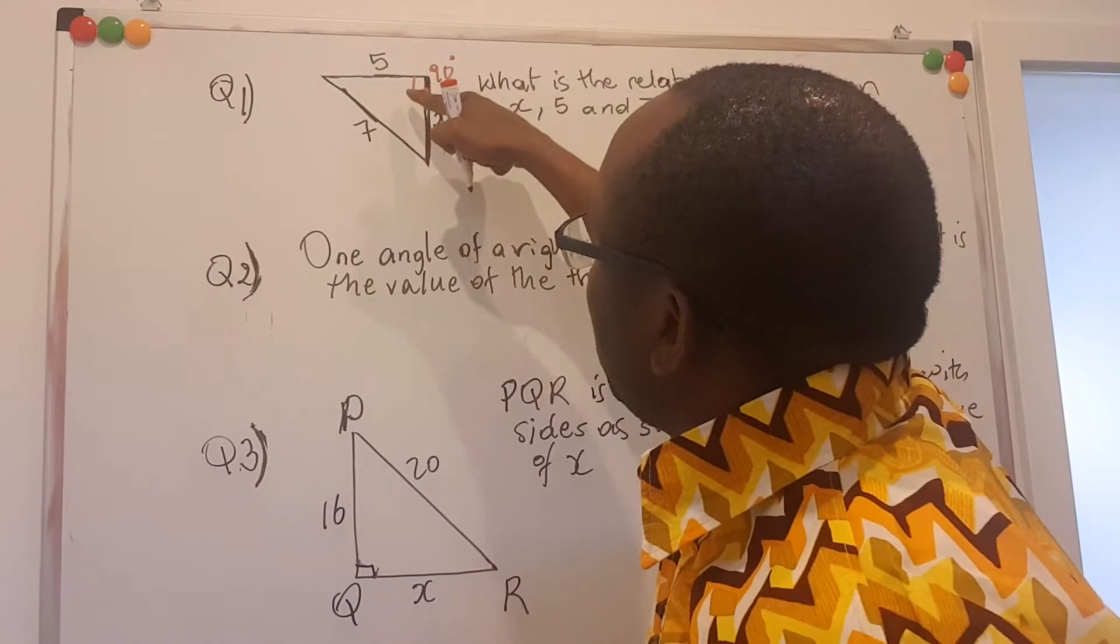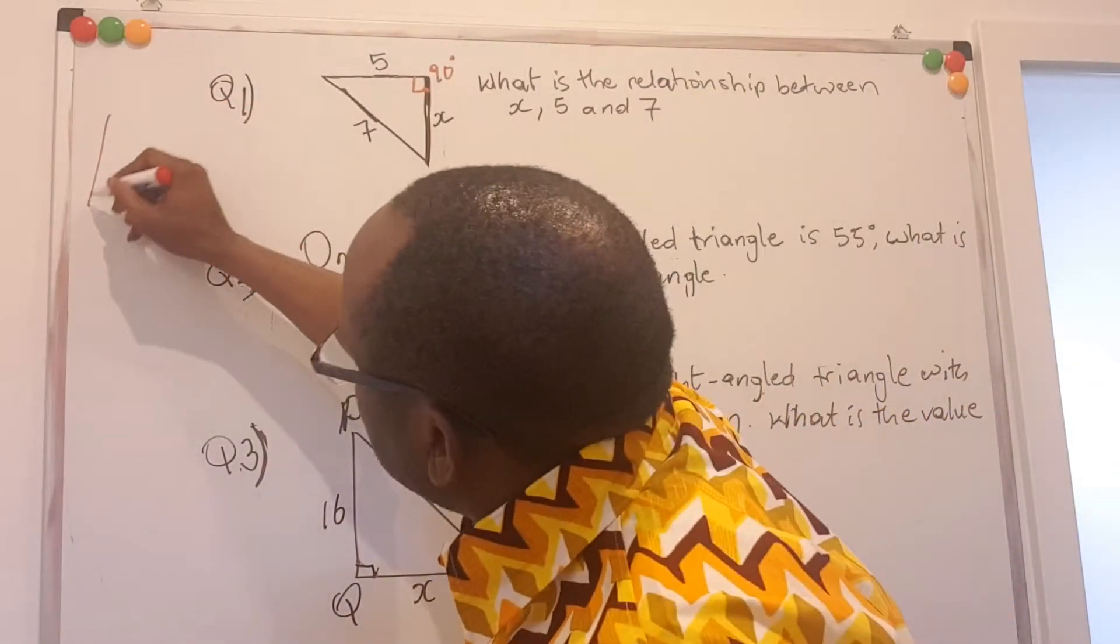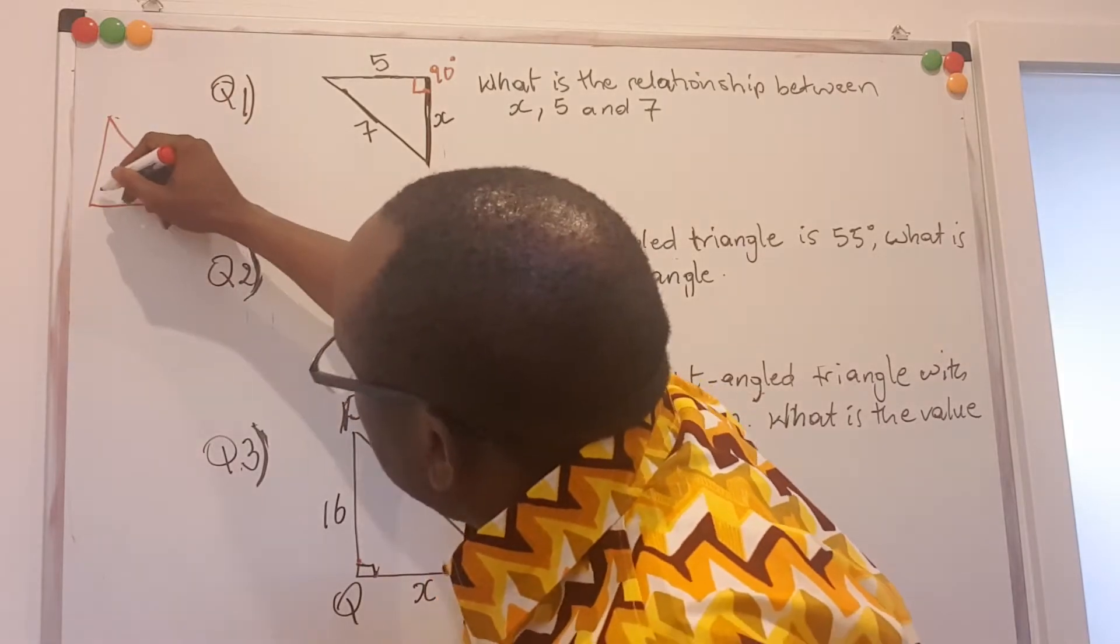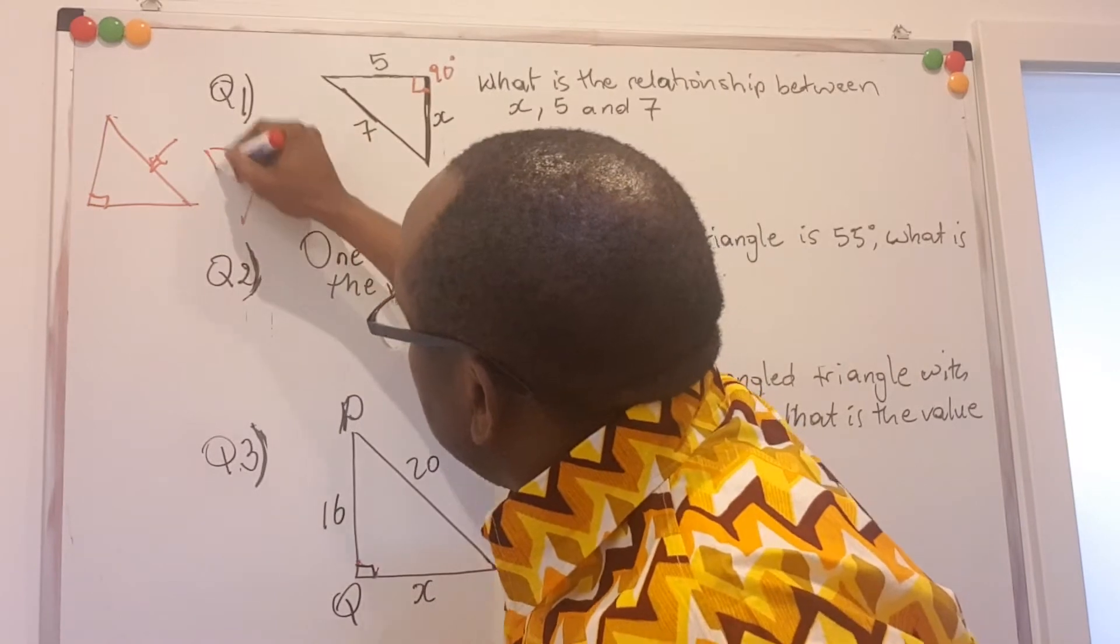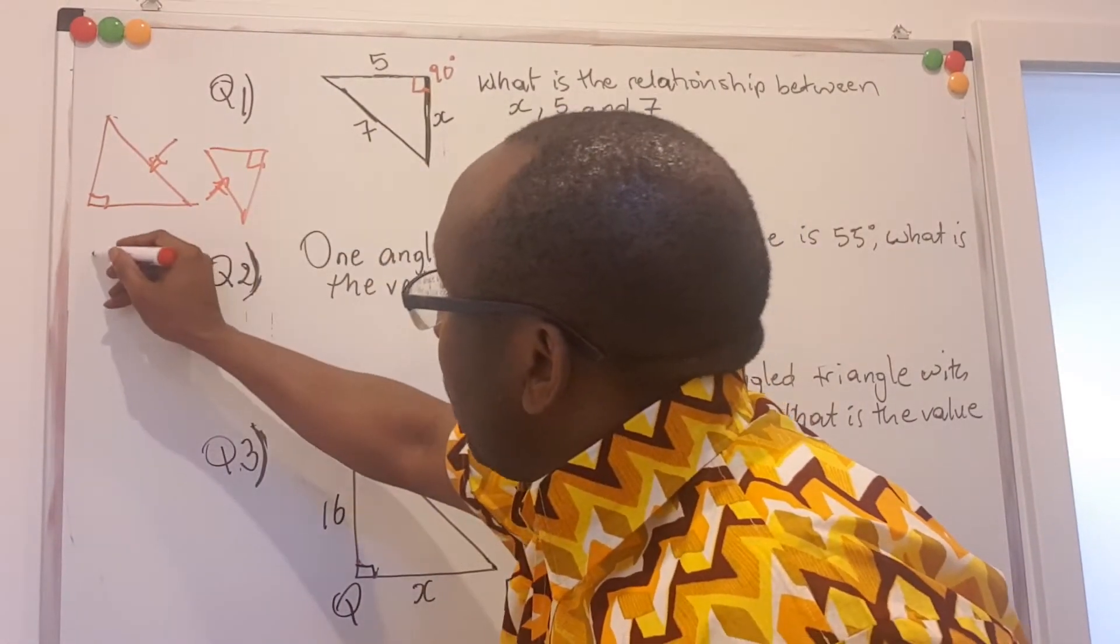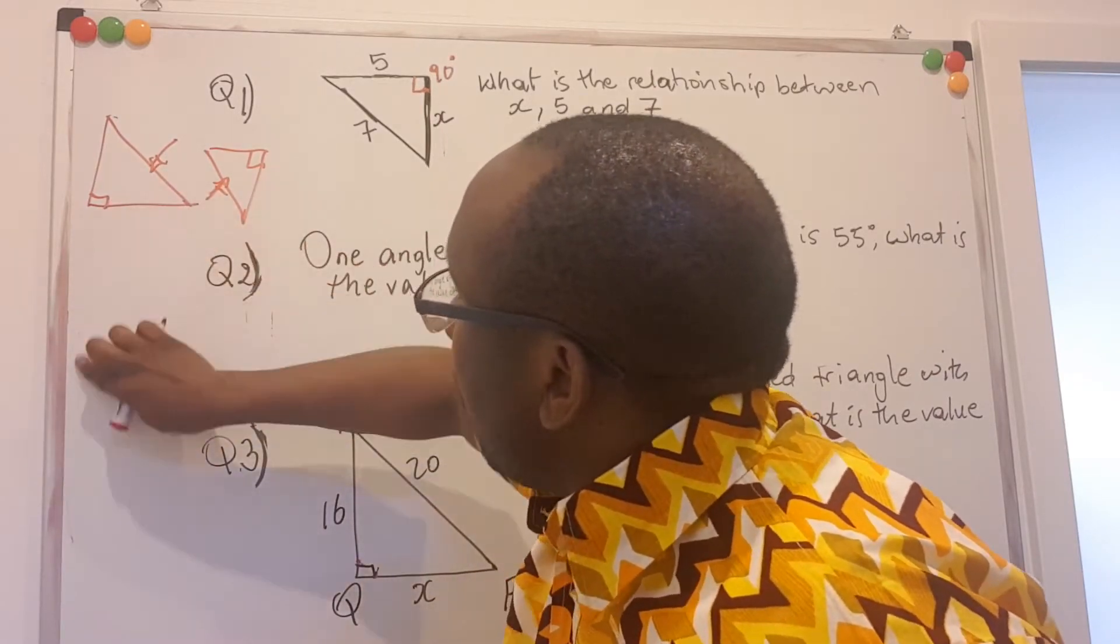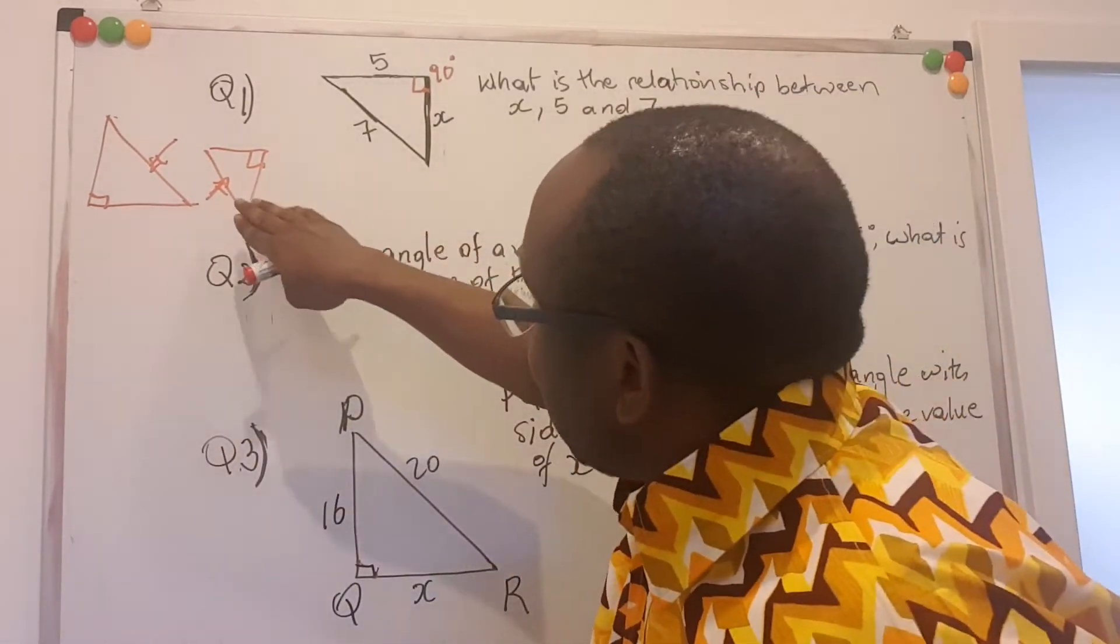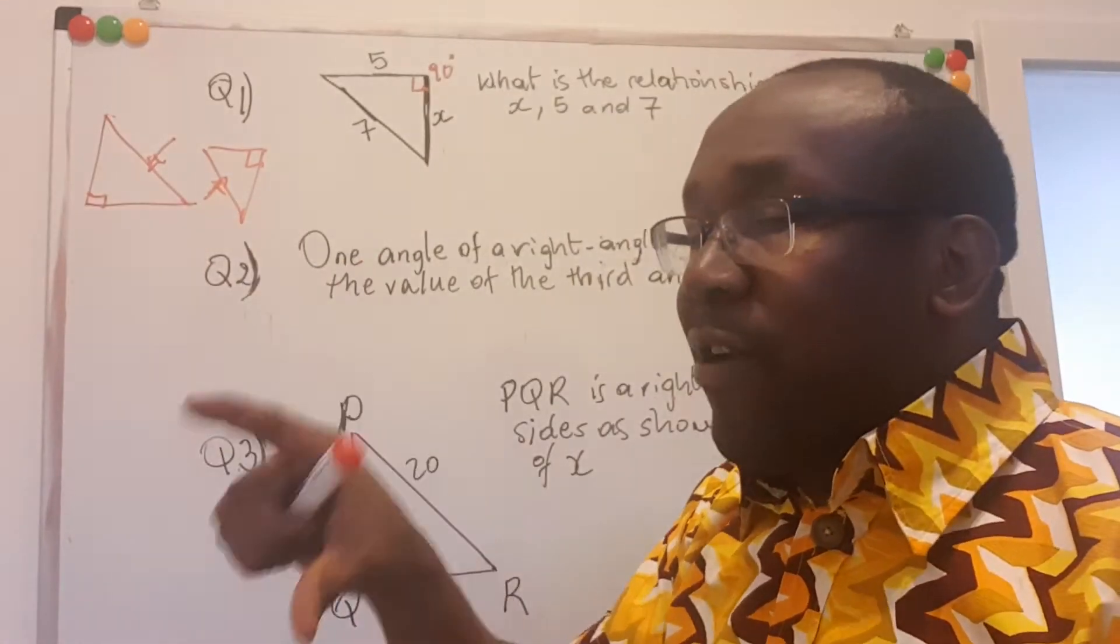So the hypotenuse is just the side opposite the right angle. Always look at that. It doesn't matter if the triangle is drawn like this, and this is the right angle, this is your hypotenuse. You can imagine many other scenarios. The side opposite the right angle is the hypotenuse, and that's the longer side of the right angle triangle.